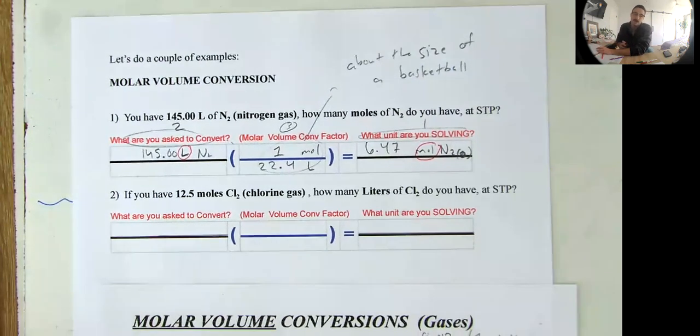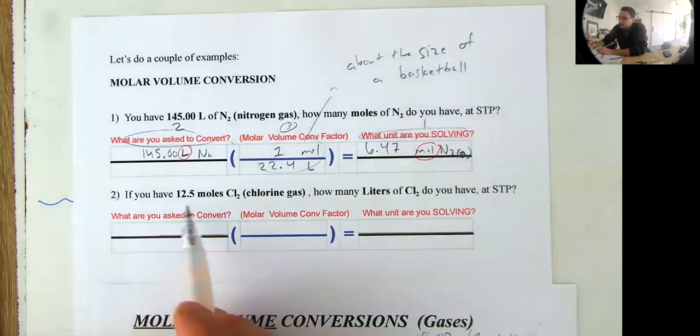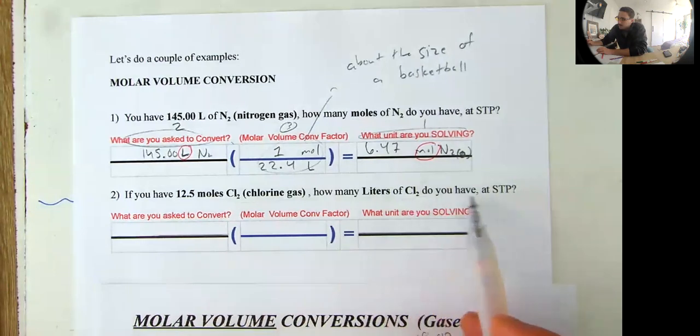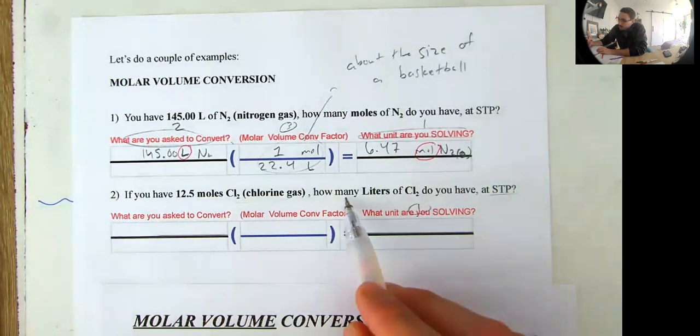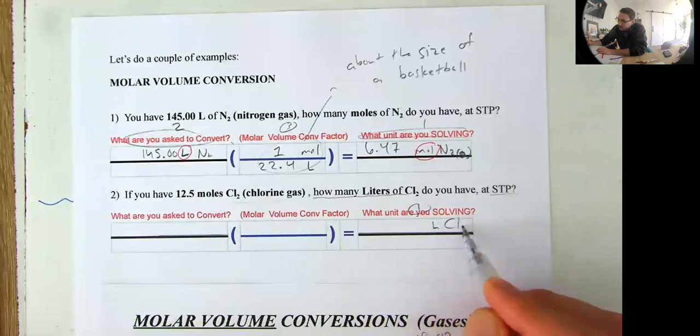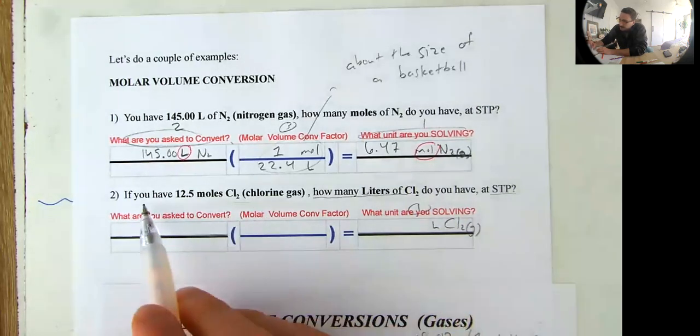Okay. You could work ahead. Pause the video and work ahead if you'd like. If you have 12.5 moles of chlorine gas, deadly chlorine gas, how many liters of chlorine gas do you have at STP? Well, step number one, what are we solving for? We're solving for how many liters of chlorine gas. So liters of chlorine gas. A little G for gas. Step number two, what are we converting? We want to convert 12.5 moles of chlorine gas into liters. So what are we converting? 12.5 moles of the chlorine gas. So mol alpha mole.